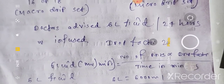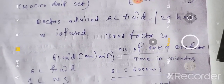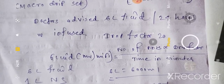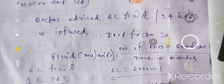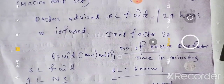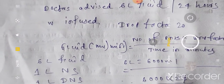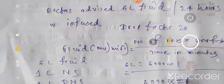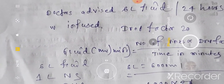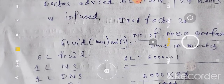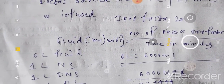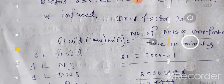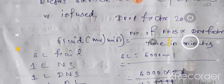हम लोग formula जानते हैं: fluid rate ml per minute is equal to number of ml into drop factor, divided by time in minutes. 6 लिटर का मतलब है 6000 ml, क्योंकि 1 लिटर is equal to 1000 ml, so 6 लिटर is equal to 6000 ml.